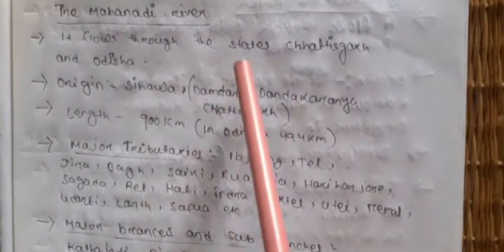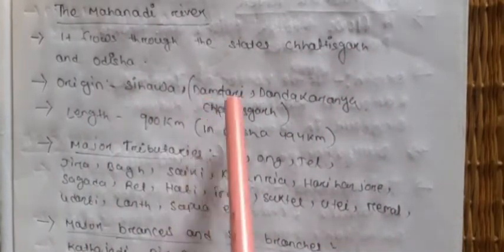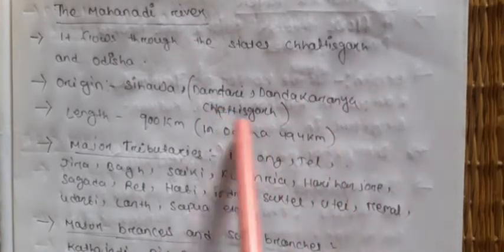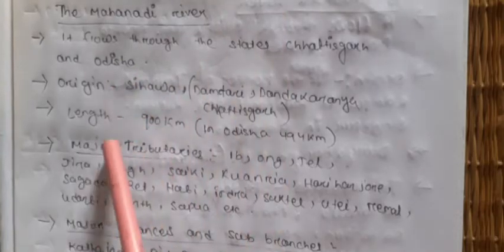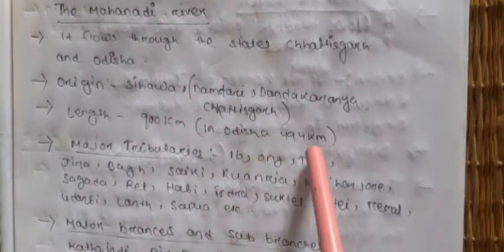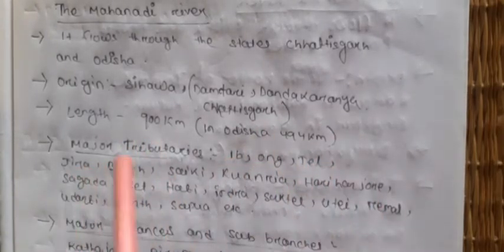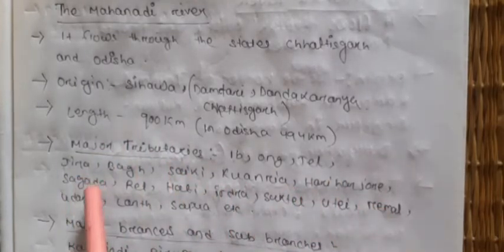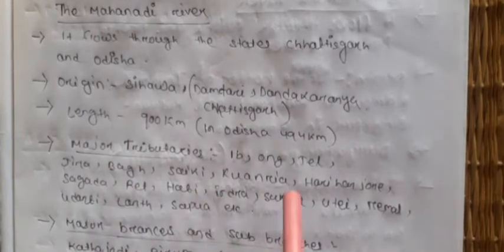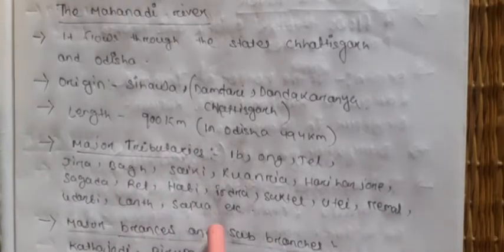Mahanadi is the largest river of Odisha, flowing through Chhattisgarh and Odisha. Its origin is at Sihawa, Dhamtari, Dandakaranya in Chhattisgarh. Total length is 900 km; in Odisha 494 km. Its major tributaries include Ib, Ong, Tel, Jira, Baag, Saithi, Kuanariya, Hariharjod, Sagada, Hathi, Indra, Suktel, Utei, Rimal, Udanti, Lant, Sapua, etc.